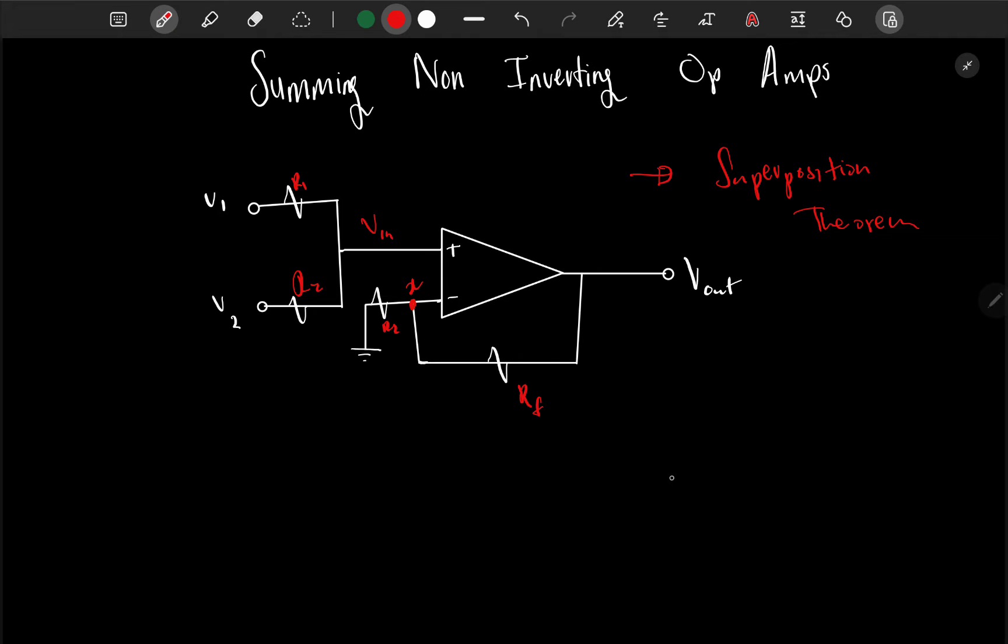V_out that goes out should be V_in, I think that should be one plus R_f all over R_1, something like this.